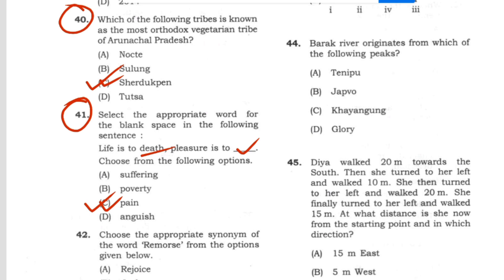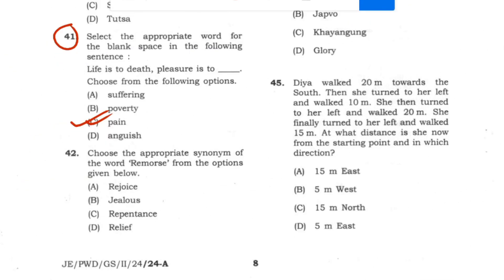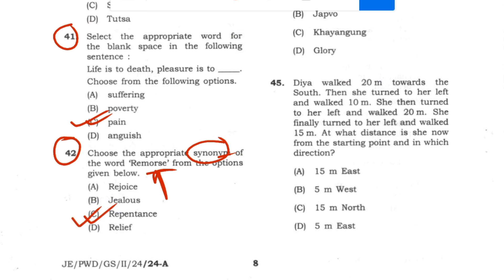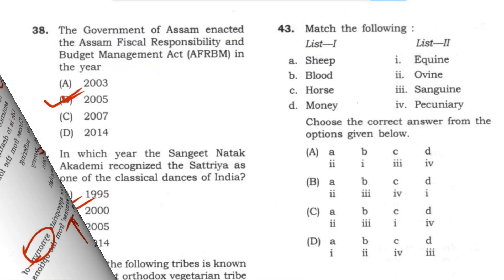Question 42: Choose the appropriate synonym of the word 'remorse.' Remorse refers to a feeling of deep regret or guilt for a wrong committed. Answer: option C — repentance.